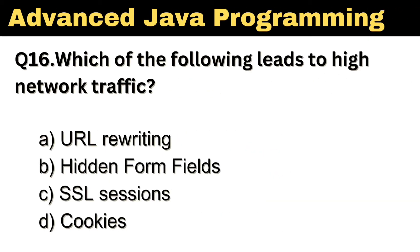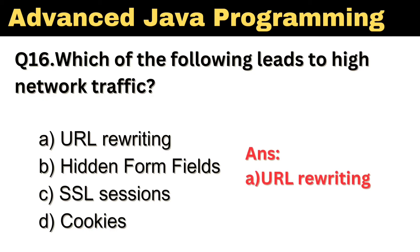Question number 16: Which of the following leads to high network traffic? The right answer is Option E: URL Rewriting.